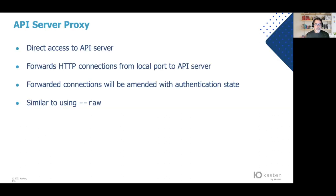What I'll be talking about first is the API server proxy. The API server proxy allows direct access to the API server by HTTP proxy. Here you can access the API server by using a local port via HTTP to access the API endpoints in Kubernetes. This is really valuable for scripting, for debugging, and in some cases accessing alpha or beta features that don't yet have integration with kubectl. This is similar to using the raw option on kubectl.